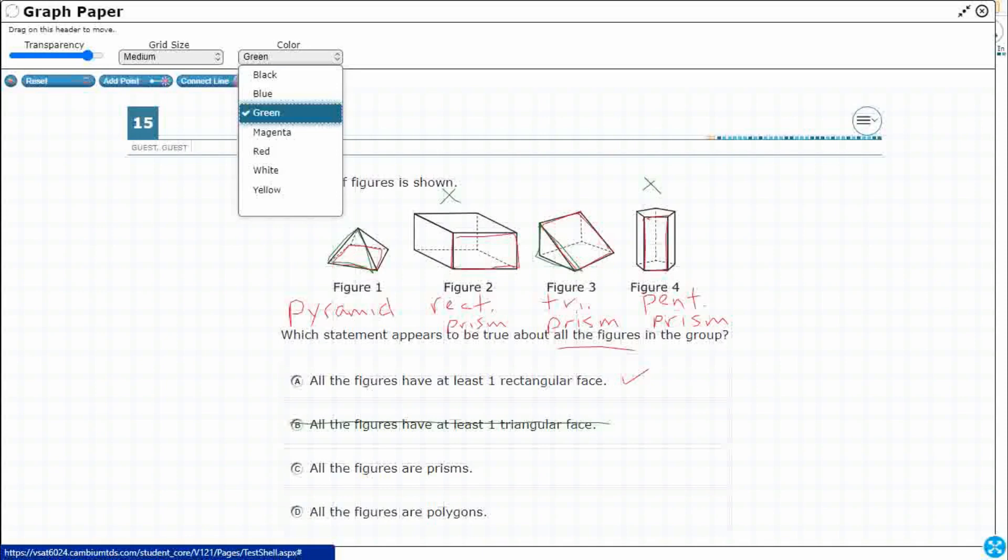Let's switch to blue here. All the figures are prisms. Well, look at my titles. I said prism, prism, prism. This pyramid is not a prism. A prism, you need two identical bases or two congruent bases that are connected with rectangles.